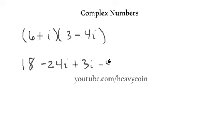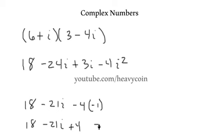Then i times i would be i squared. Now we end up with 18. We've got negative 24 plus 3 is negative 21i minus 4. Now remember that i squared is equal to negative 1. So we have 18 minus 21i plus 4. And of course we can simplify this down. 18 plus 4 is 22 minus 21i. And that of course is the form that we want to get it in.